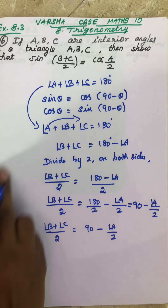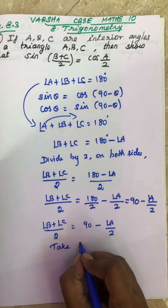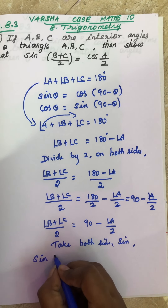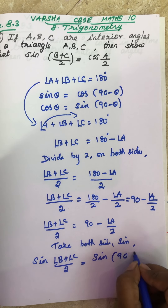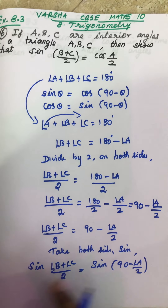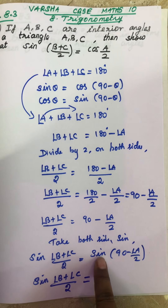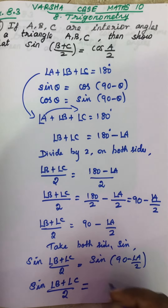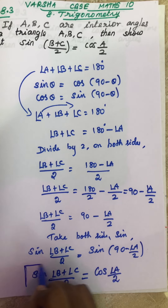Now take sin on both sides. The LHS will be sin((B+C)/2) and the RHS is sin(90° − A/2). By the formula, sin(90° − θ) equals cos θ. Here θ is A/2, so sin(90° − A/2) = cos(A/2). Therefore LHS = cos(A/2), which is what we had to prove.